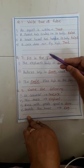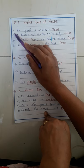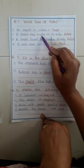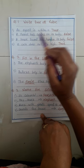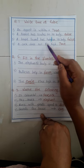Now write in your notebook and practice at home. True or False: Number one — an egret is white. Answer: True. Number two — a parrot has scales on its body. Answer: False. Number three — a house lizard has hair on its body. Answer: False. Number four — a cock does not fly high. Answer: True.